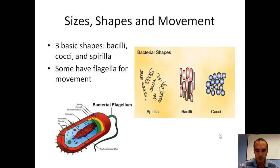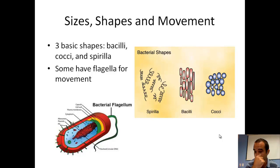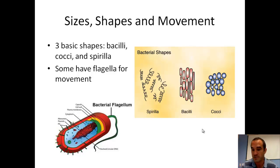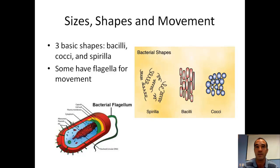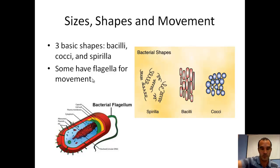Bacteria come in three basic shapes: bacilli, cocci, and spirilla. If you've ever gotten strep throat, it's called streptococcus because it's this circular shape. Usually bacteria come in two names, and the shape of the bacteria is part of that name. Some bacteria also have a flagellum for movement, which is how they get around.